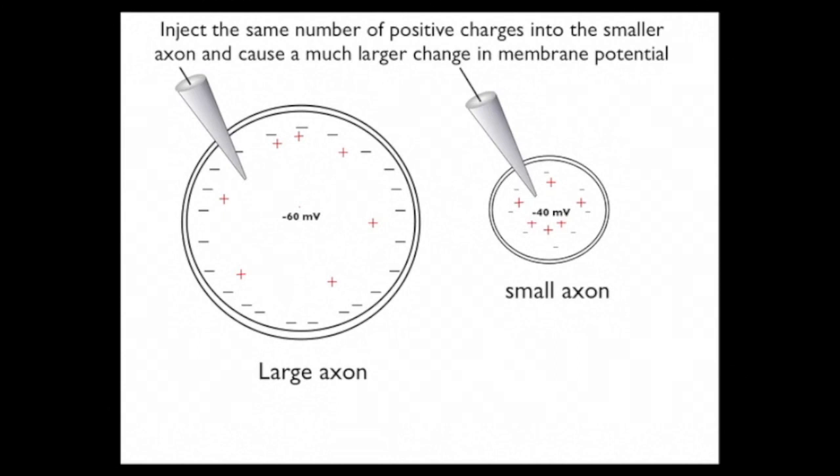As a consequence of that, the same number of charges depolarizes the axon by a much larger amount. In this case, I made up the number 40 millivolts. But the point is, for the same number of charges, because the larger axon has a larger capacitance, it takes more charges to change the membrane potential by a millivolt.